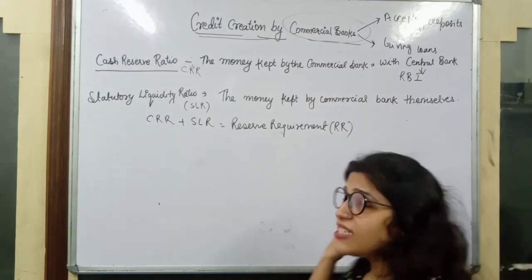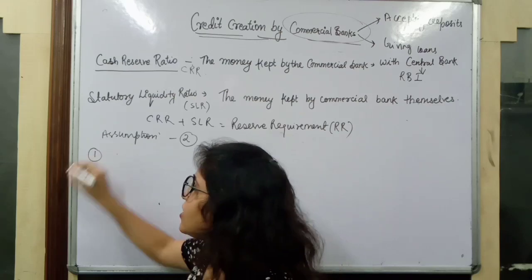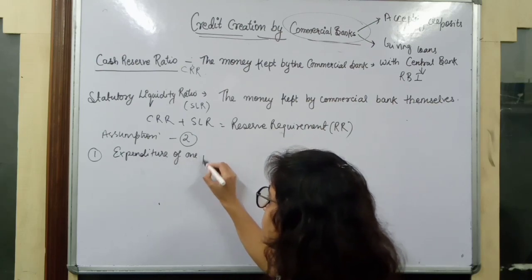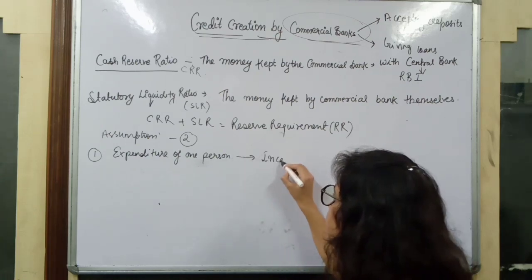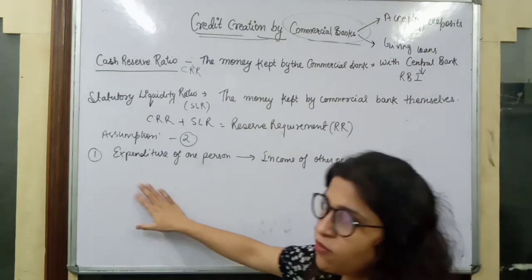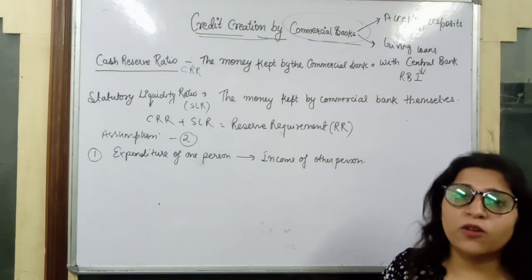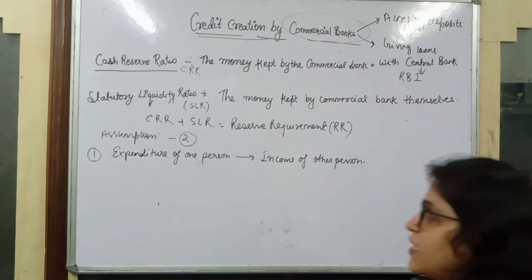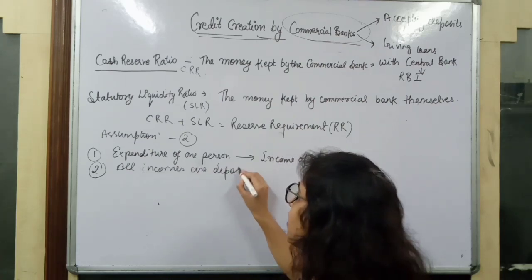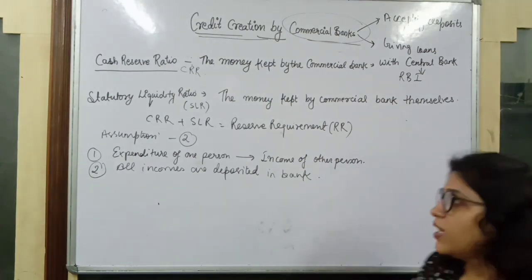Now let's start with credit creation. For credit creation, we have two assumptions to follow. The first assumption is that the expenditure of one person is the income of another person. The second assumption is that all incomes are deposited in the bank — all the money in the country gets collected in the bank.